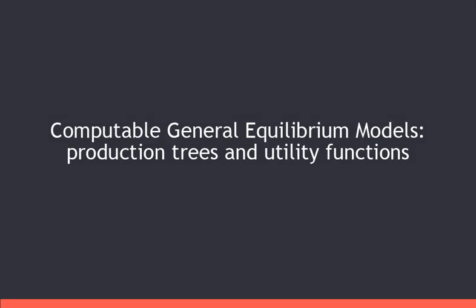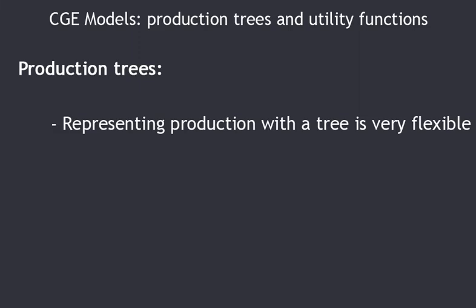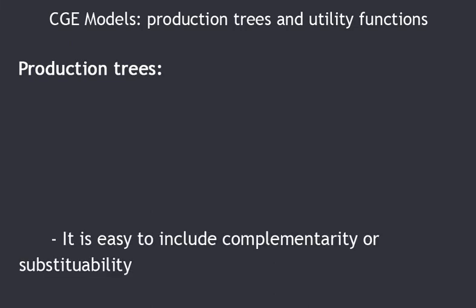Here is a new lesson on production trees and utility functions. To work on better representations of production, we will very often use production trees. This representation in the form of a production tree is interesting because it's very flexible — it allows the modeler to reflect on the best way to represent production, with the possibility of differentiating the modelizations of production from one sector to another. We will also see that complementarity between factors of production or substitutability can easily be included.